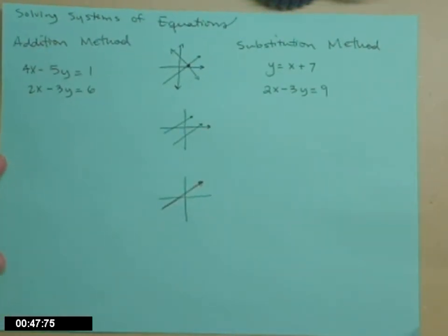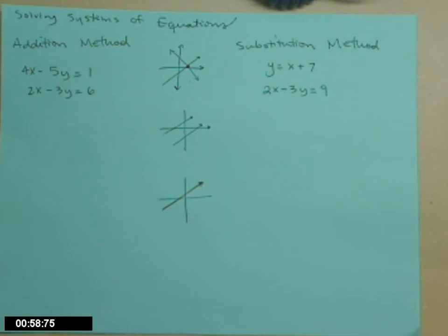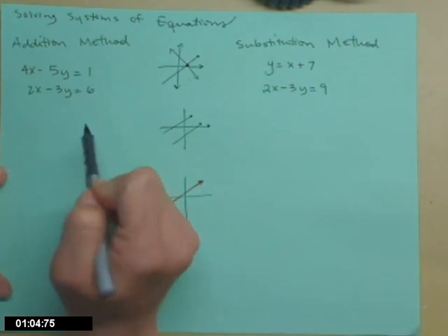So there are two methods you can use. The first one is the addition method. Some books call this the elimination method. And what you want to do is multiply one or both equations by a constant that makes the coefficients of one of the letters equal but opposite in sign. So if I look at my two equations, that bottom equation, if I multiply the x term by a negative 2,